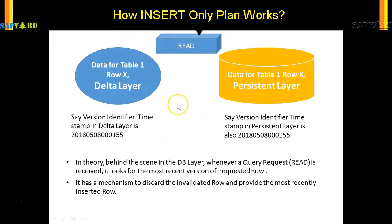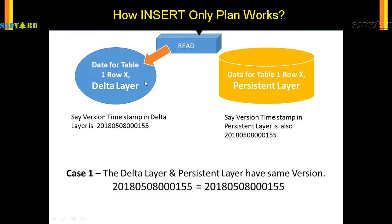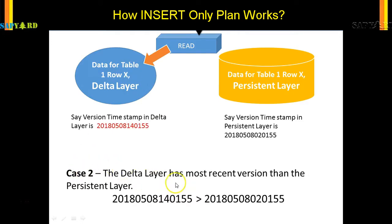For example, in Case 1, Table 1 Row X has the same timestamp in both layers — 8th of May at 1:55. If you do a read statement, it will come from the Delta layer because it is in RAM and will be faster. The Delta layer and the persistent layer have the same version, so the read goes from the Delta layer.